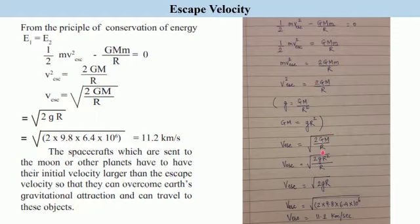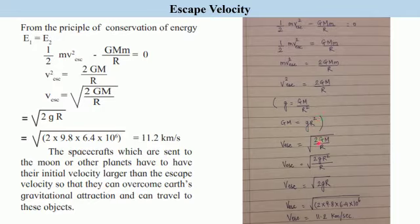Substituting GM = gR² into the equation v_escape = √(2GM/R), we get v_escape = √(2gR²/R). One R from the numerator and one R from the denominator cancel, giving us the final result: escape velocity equals √(2gR).